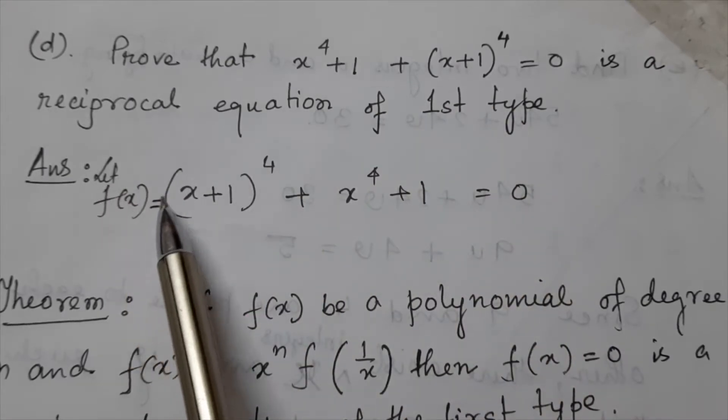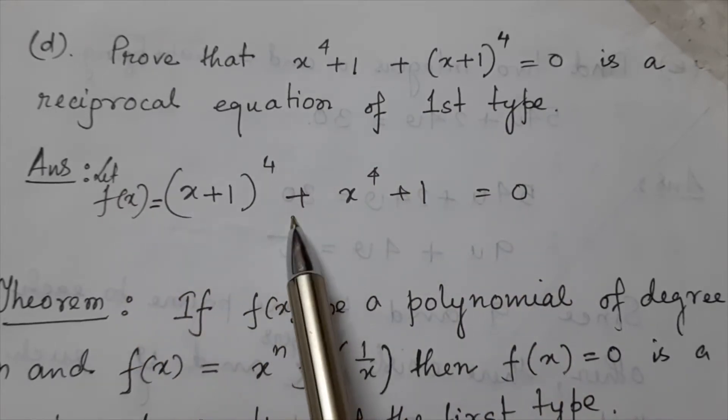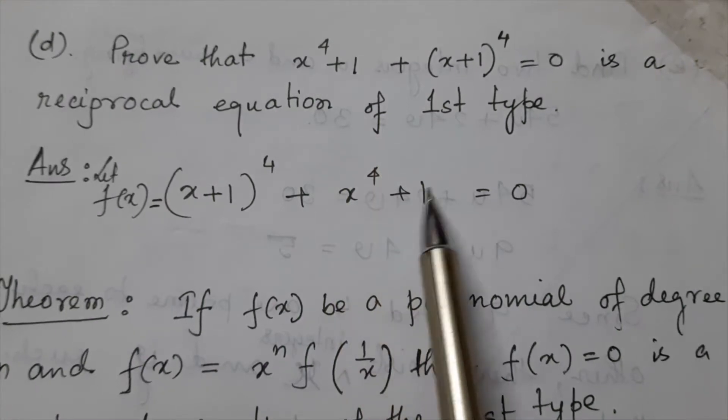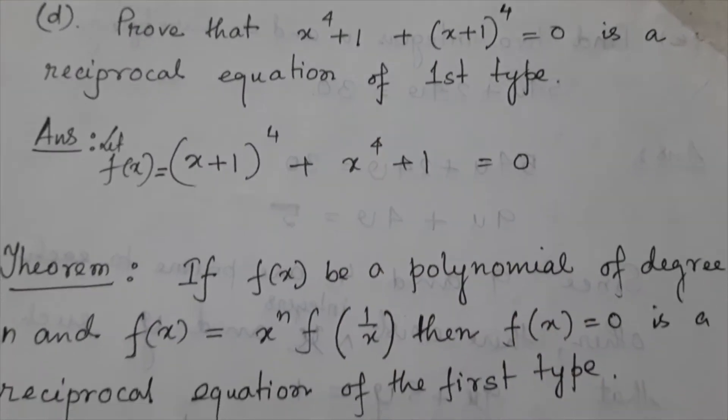Let f(x) equals x plus 1 to the power 4 plus x to the power 4 plus 1 equals 0. Here is a theorem.